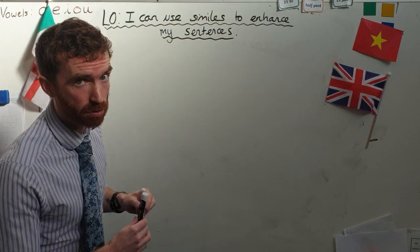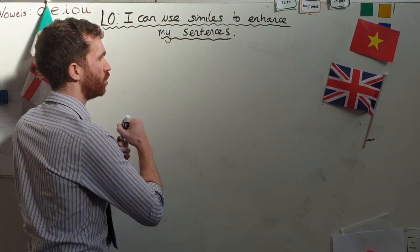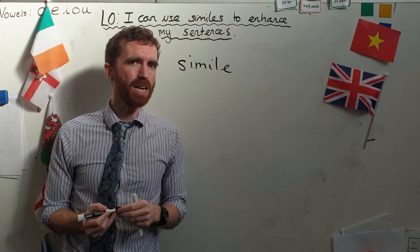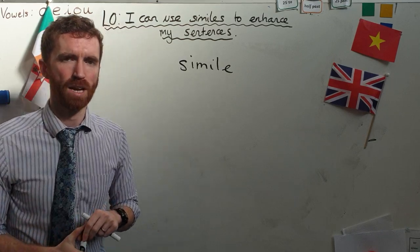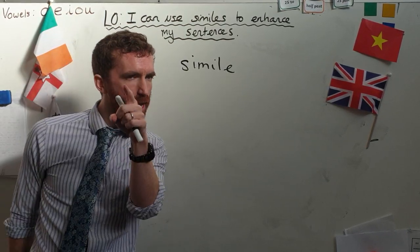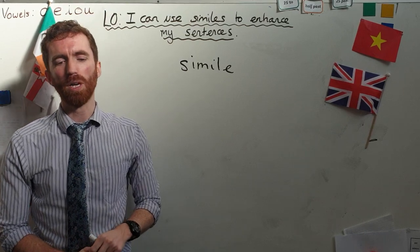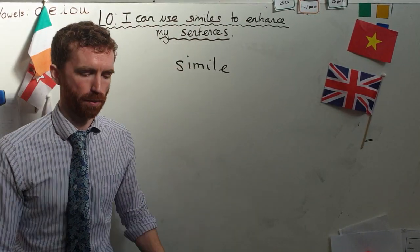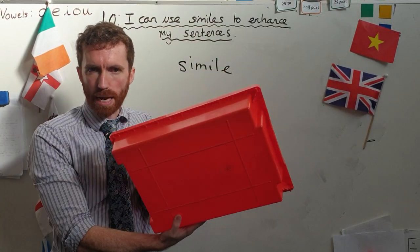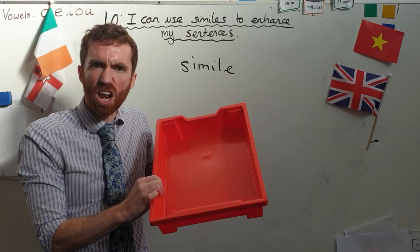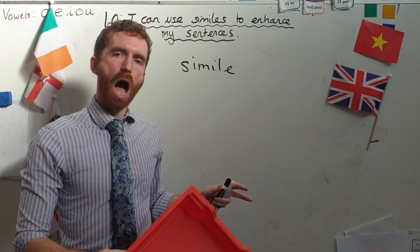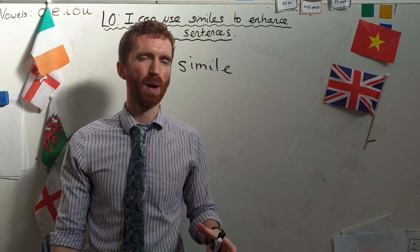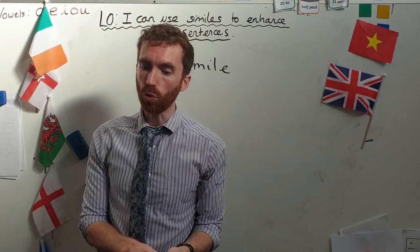The obvious question I'm going to ask you to tell your partner, or write down on a sheet if nobody is there: what is a simile? Absolutely right, 100%, you've got it. A simile is when we compare one thing to another thing. For example, I might say this tray is as red as lava. I am building up a better picture of how red the tray is by comparing it to another red that I already know.